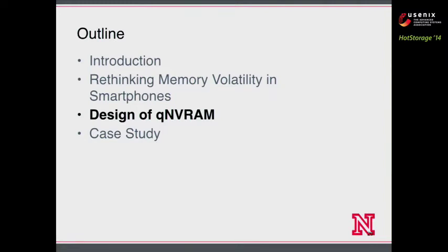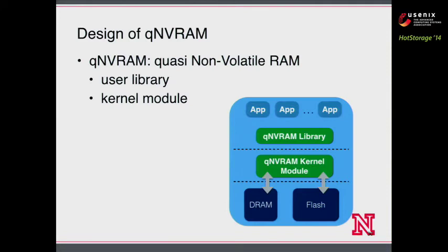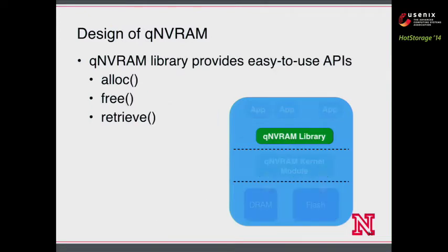QNVRAM is implemented as a set of software components: a user library and a kernel module. It requires no extra hardware. We call it quasi-non-volatile because it's not 100% non-volatile — there are certain rare cases where we still lose data. The QNVRAM library implements easy-to-use APIs for applications to allocate, free, and retrieve data. The application can allocate and free a piece of QNVRAM during normal execution and retrieve the data upon failure recovery.